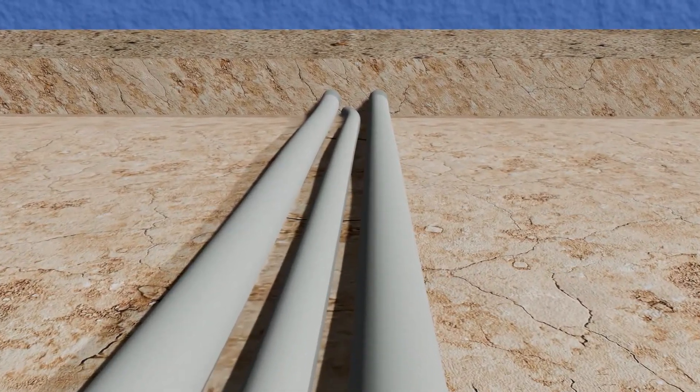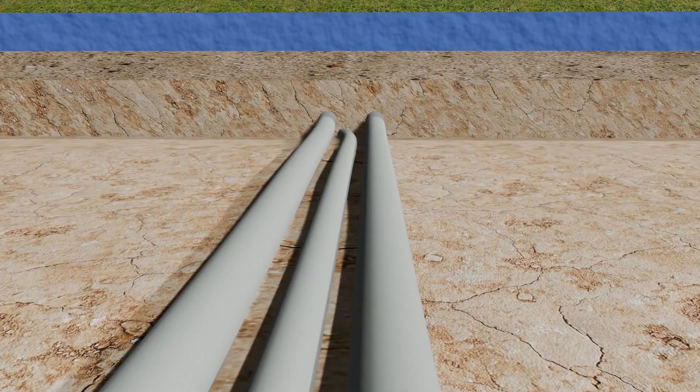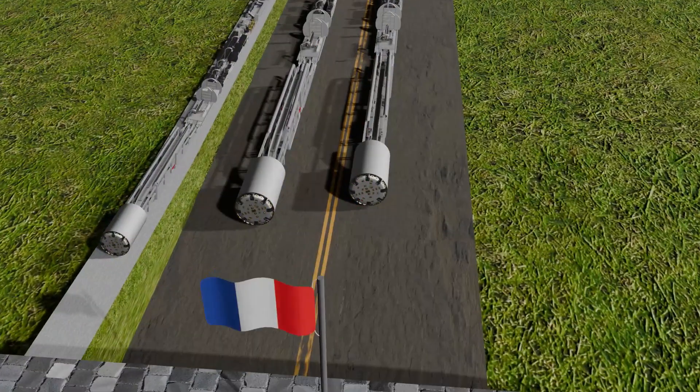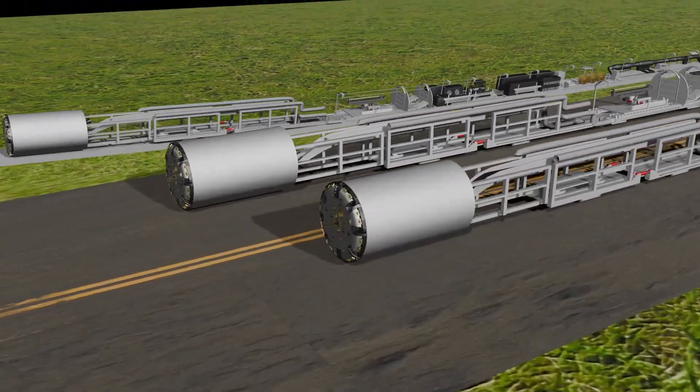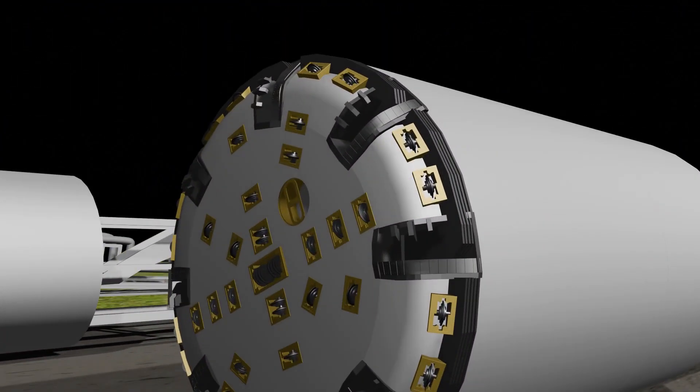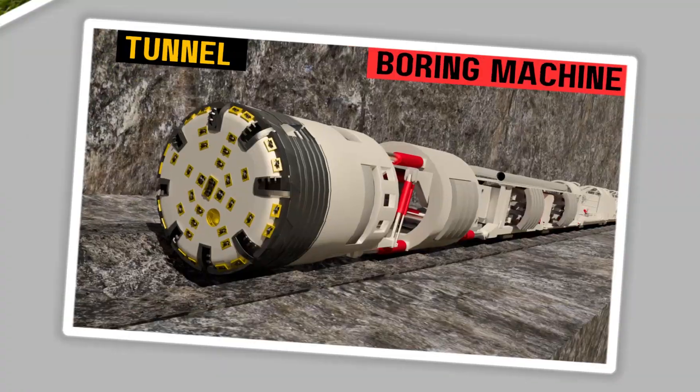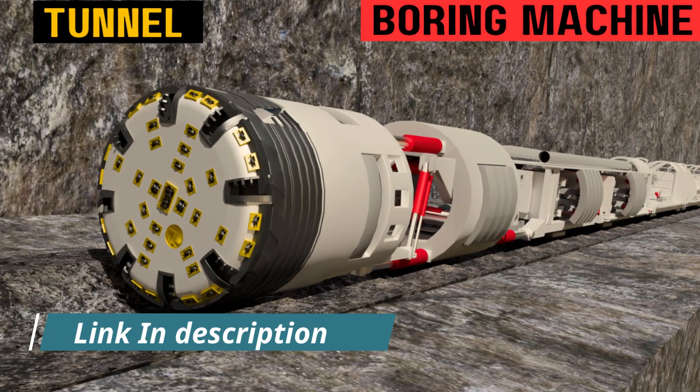For this purpose, a specialized machine known as the Tunnel Boring Machine, or TBM, was developed. The TBM features cutting discs at its head, designed to excavate soil efficiently. You can learn more about the detailed working of the TBM through the video link provided in the description.